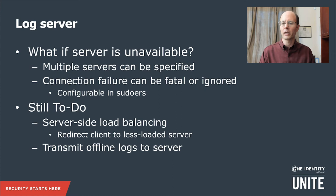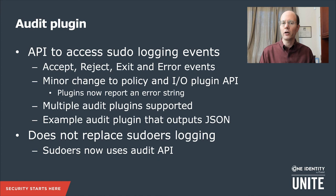So now to the new plugin types. The audit plugin is basically an API to access the various data that Sudo has about the logging. There are a couple of different logging event types: an accept event when a command is allowed, a reject event when the command is denied by the policy, an exit event when the command completes, and error events if there's an error in the front end or any of the plugins. This required a minor change to the policy and IO plugin API. Basically, the plugins now have a way to report an error stream back, whereas before it was just a yes or no — did it work or did it not? Multiple audit plugins are supported.